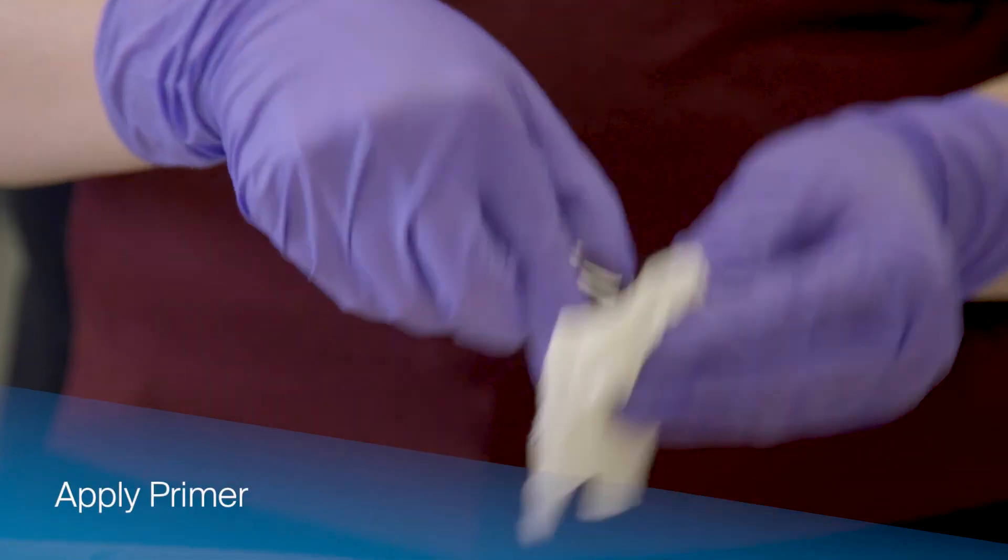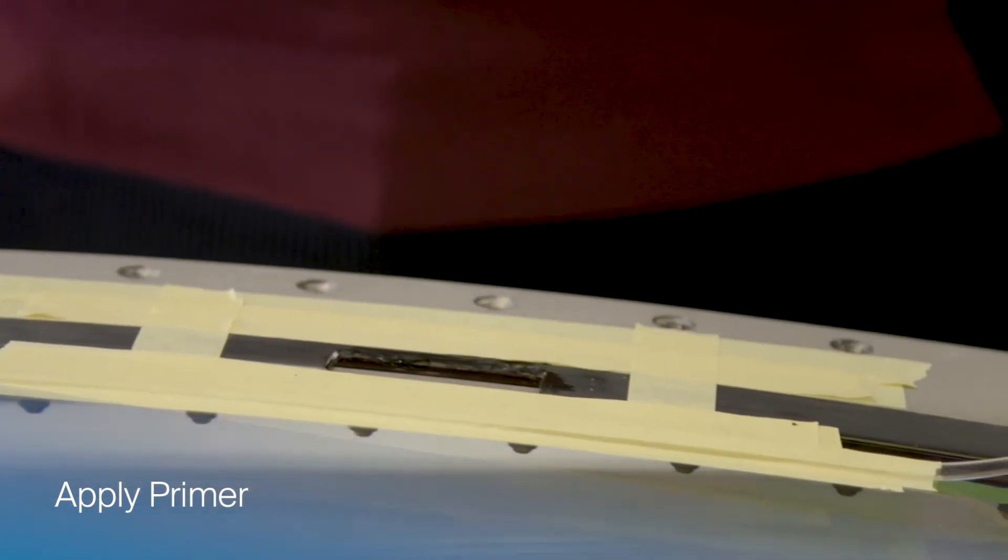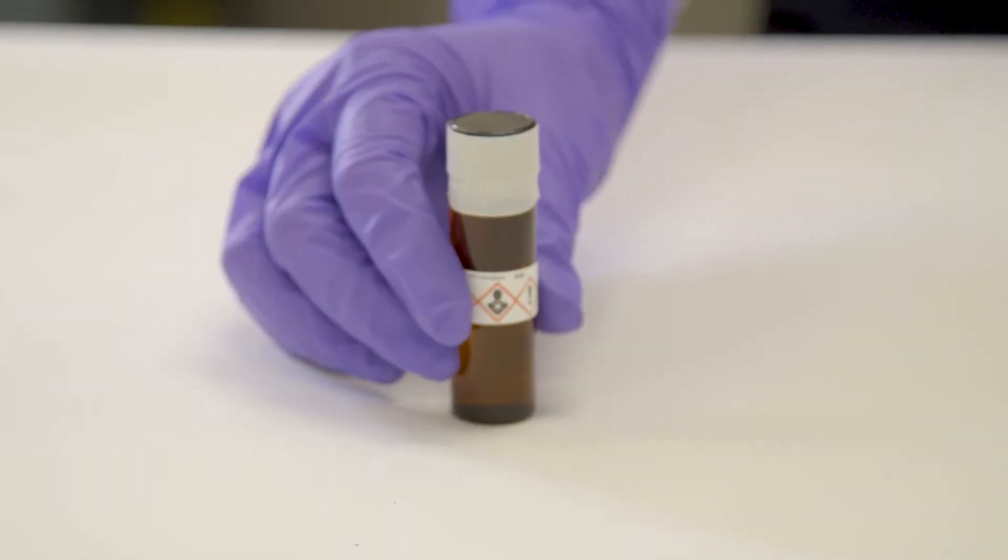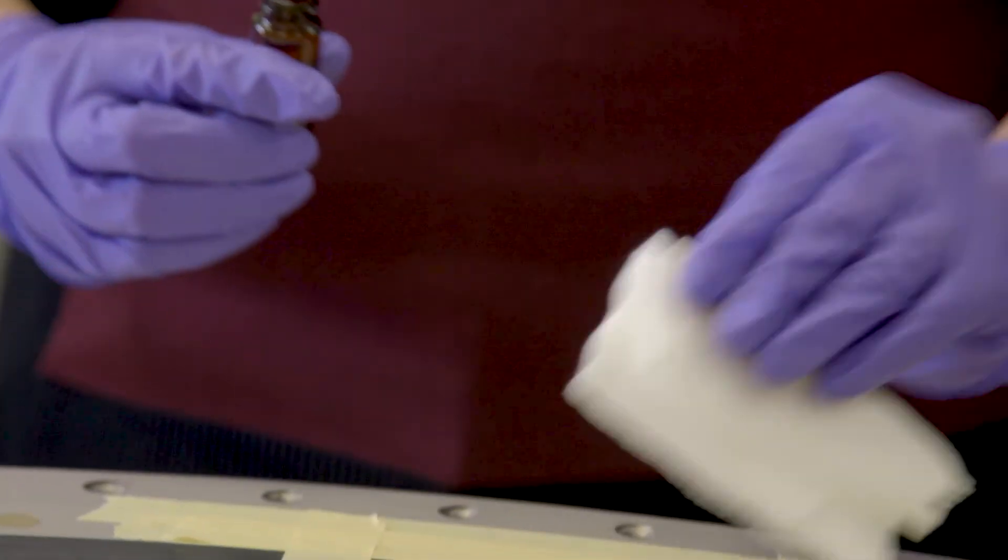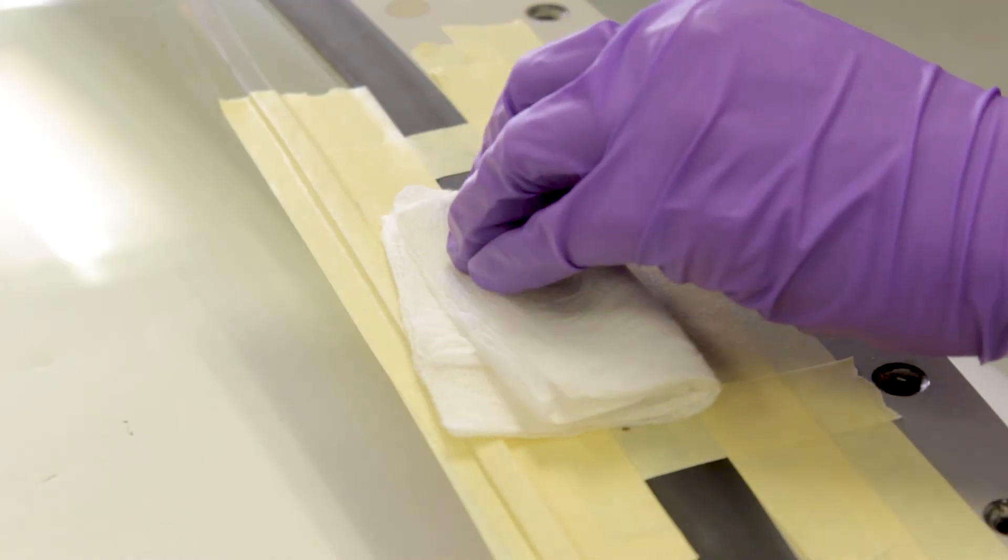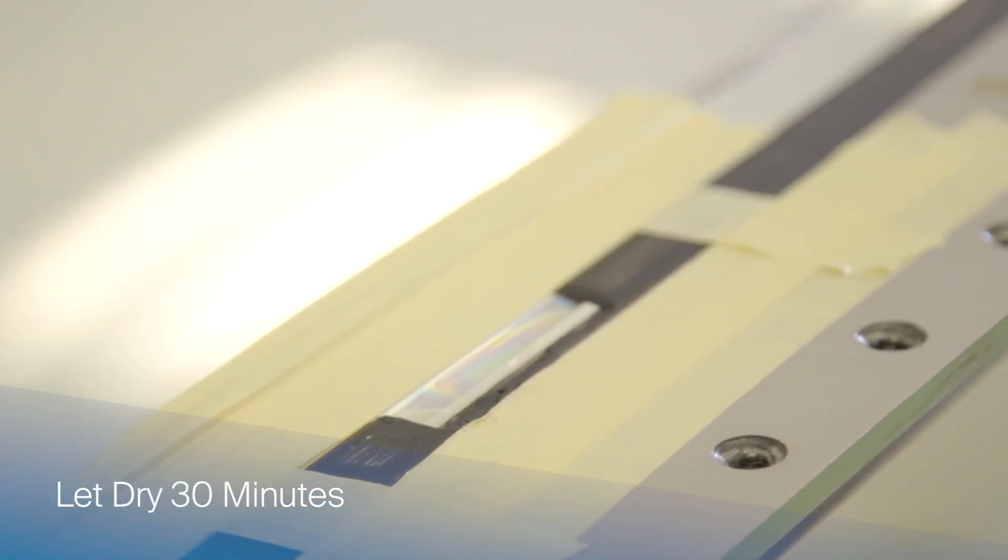Using a gauze pad, apply a thin coat of primer to the surface of the glass where the repair is being performed. The primer must be applied to the windshield immediately after cleaning it to prevent dust particles and other airborne contaminants from settling on the clean surfaces. Any contaminant on the surface can adversely affect the adhesion of the sealant to the substrate. Allow the primer to air dry for a minimum of 30 minutes.